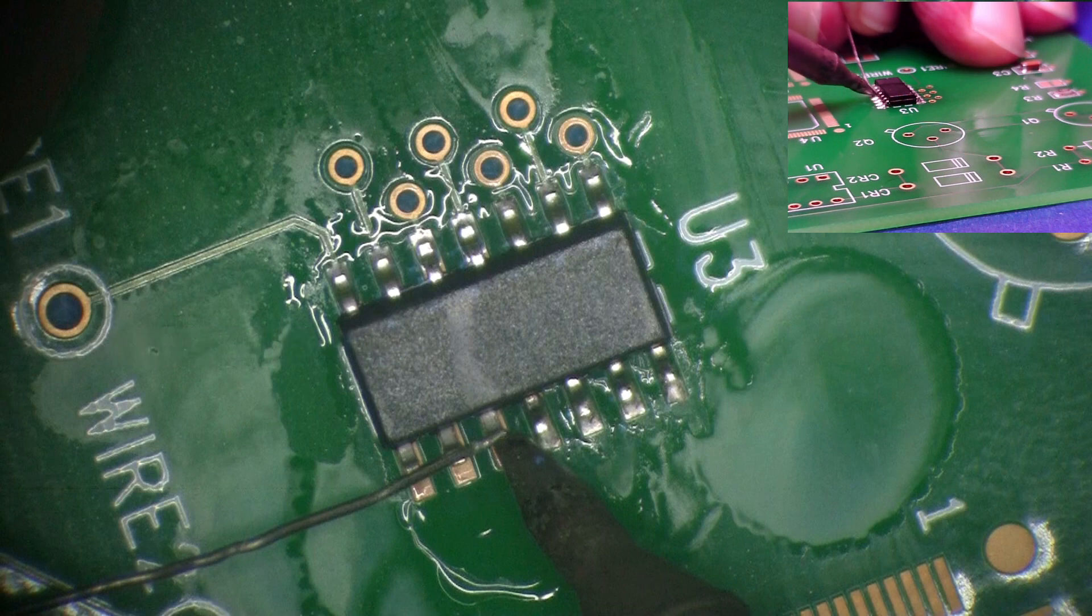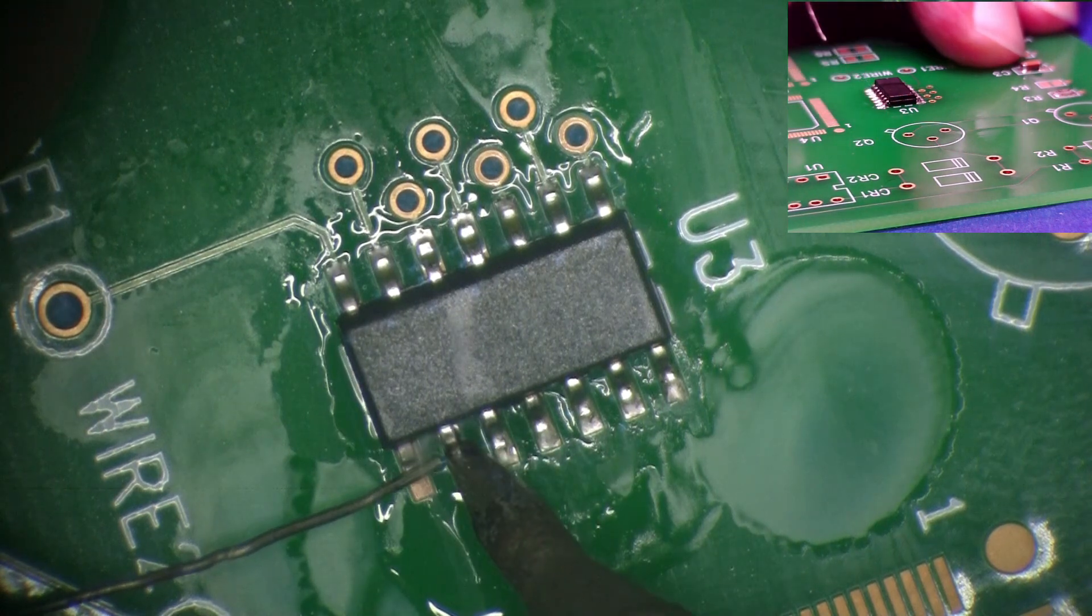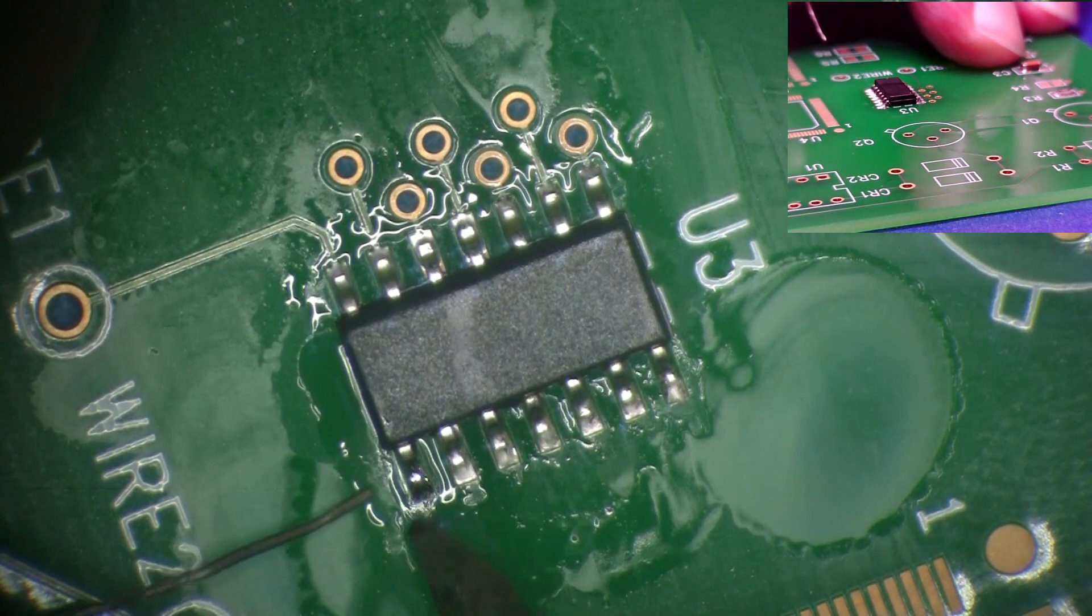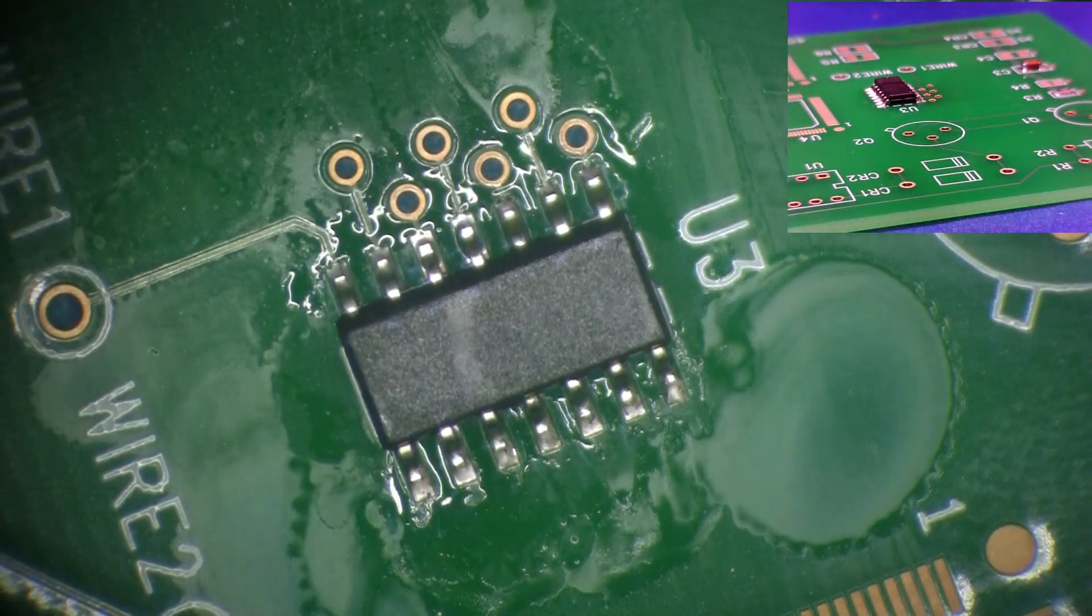Using a gentle sweeping motion, the iron is moved from the top of the lead toward the toe and land, allowing the solder to flow over the lead and the land. After the solder has solidified,